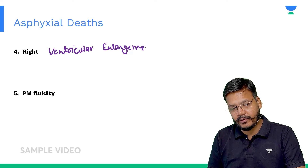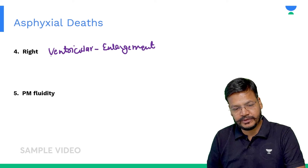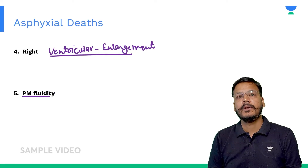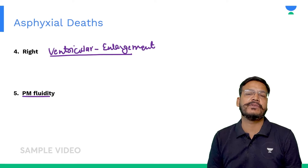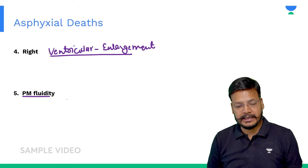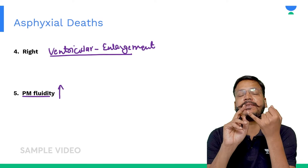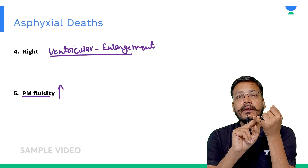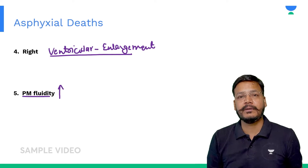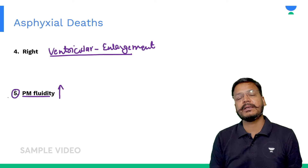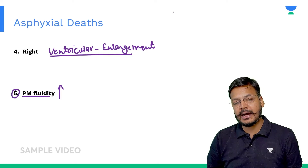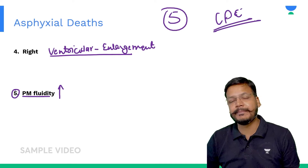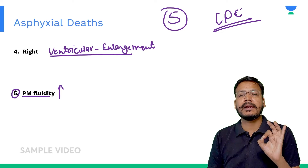Right ventricular enlargement is another very important feature, along with increased post-mortem fluidity. These are the five features of asphyxial death: cyanosis (C), petechial hemorrhage (P), congestion (C), right ventricular enlargement of heart, and increased post-mortem fluidity. The classical triad remains CPC — cyanosis, petechiae, congestion.